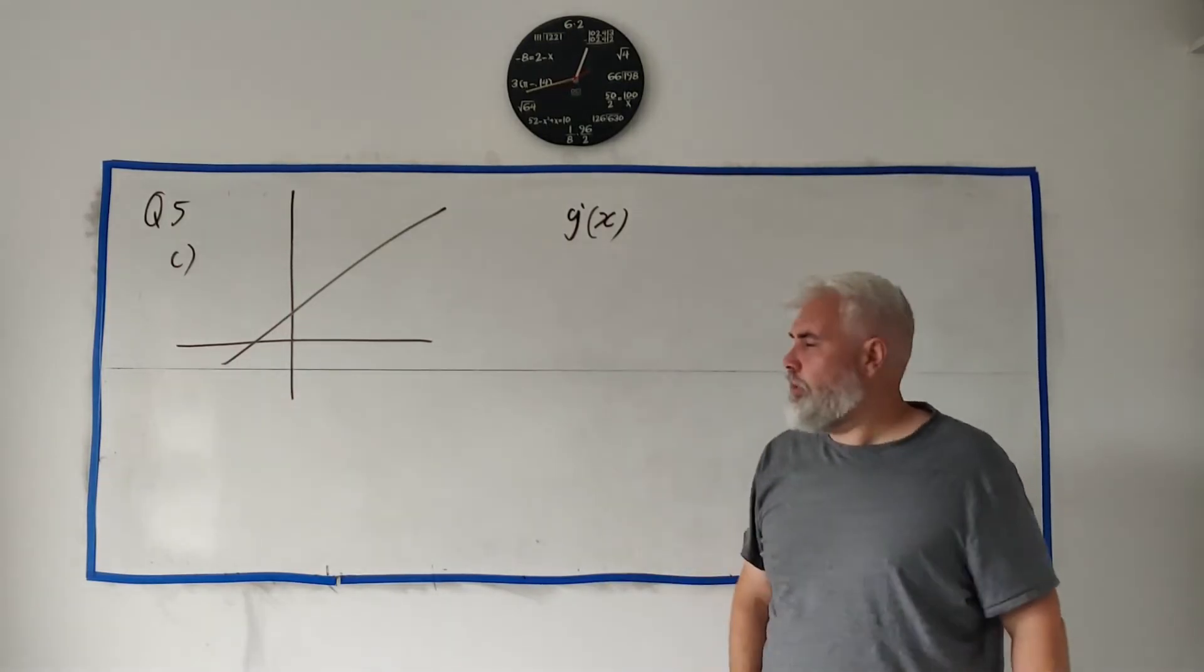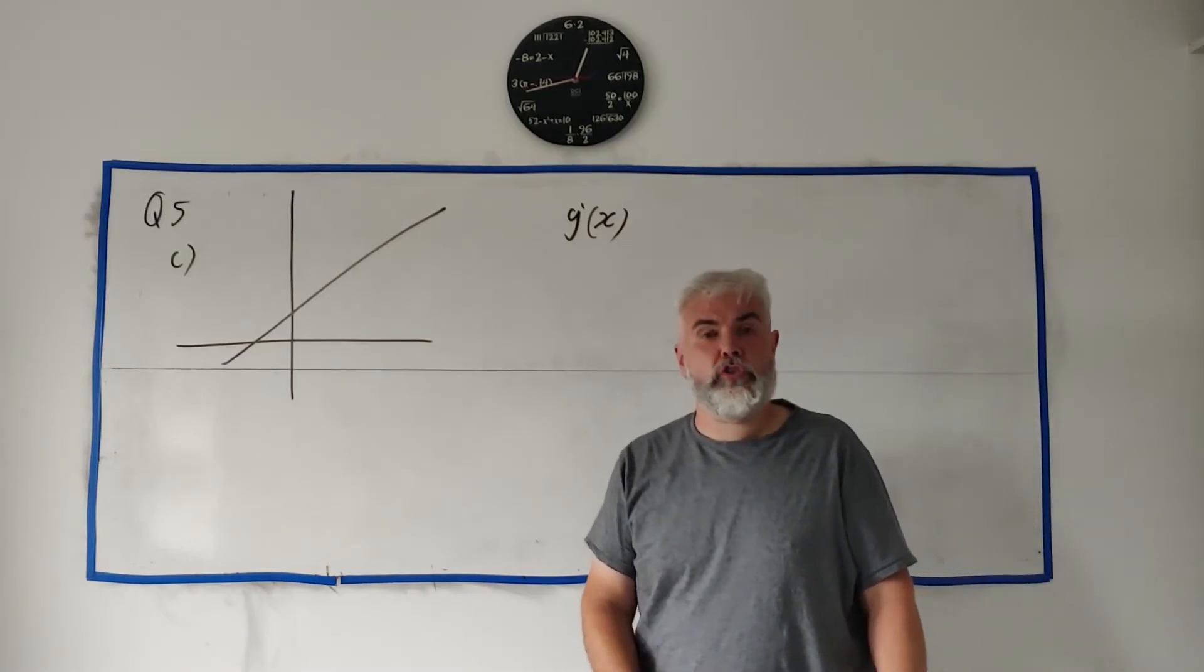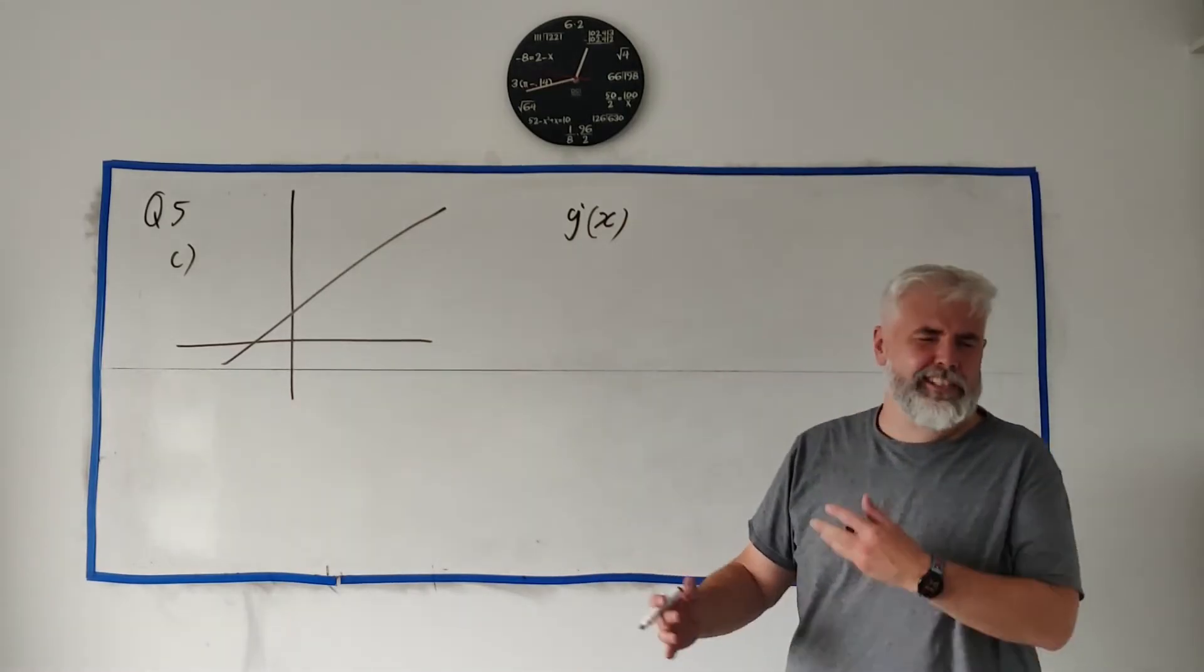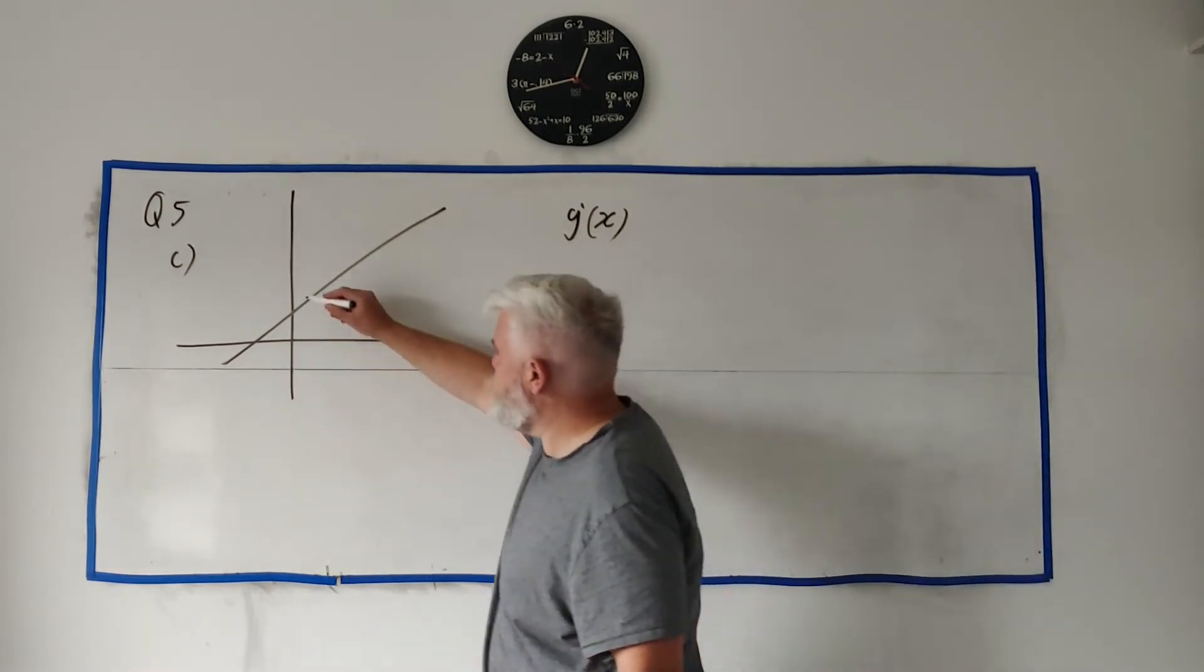So how do you find the slope? The way most students like to do it is the slightly longer way, it's to find two points, and this does have two points that are quite nice.